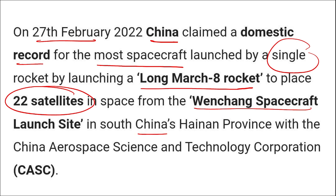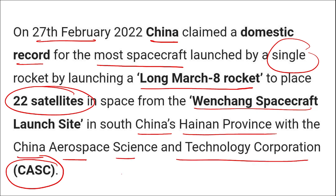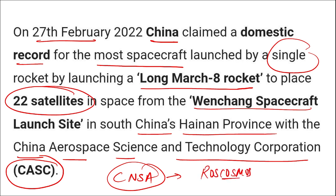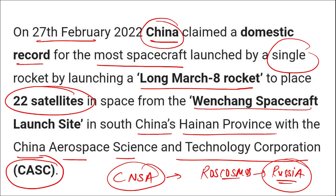The launch took place from the Wencheng Spacecraft Launch Site in South China's Hainan Province, with the help of CASC — China Aerospace Science and Technology Corporation. CNSA is China's space agency, while Roscosmos is Russia's space agency. The Long March 8 rocket set a record for the most spacecraft launched — 22 satellites — in a single launch on 27th February.